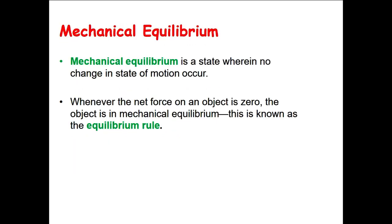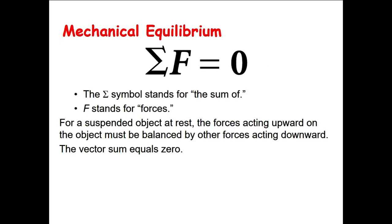To summarize, mechanical equilibrium is a state where no change in motion happens. The reason for that is that the net force on the object is zero. Mathematically, we write it using this symbol: the sum of the forces is equal to zero.